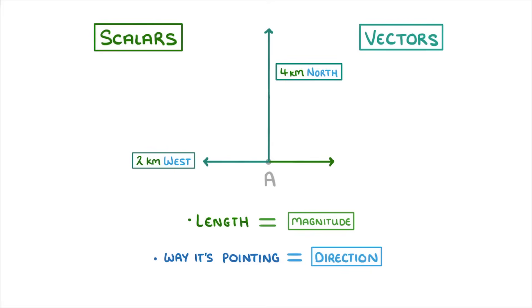We can also have negative vectors. For example, if we just had these two arrows, we could label our 2 kilometer west one as minus 2 kilometers east instead, because it's effectively backwards in the east direction.